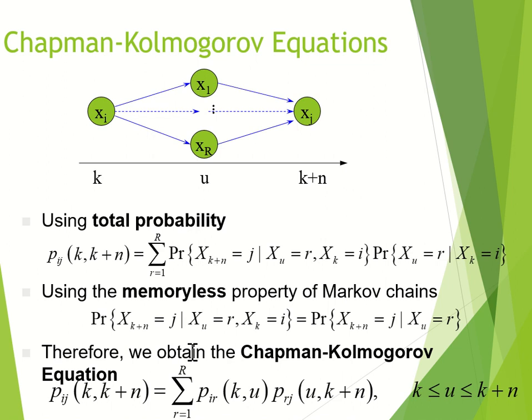You can use this to form the Chapman-Kolmogorov equation, which is, essentially, the summation across every single possible intermediate r of the probability of going from state i to r, times the probability of going from state r to j. And that will give you the probability of going from state i to j in n steps.